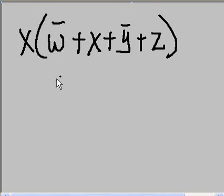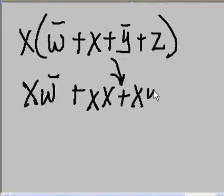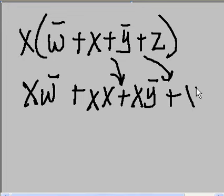Alright, let's multiply this out. We get x w-naught ored with x x, ored with x y-naught, ored with x z.